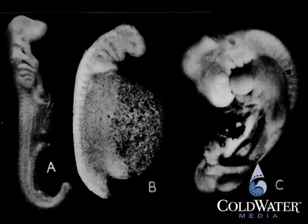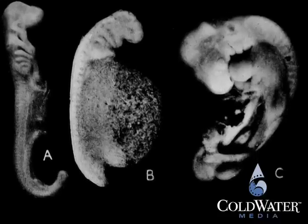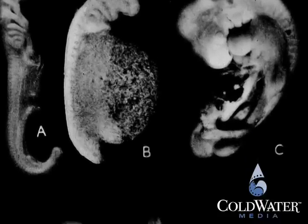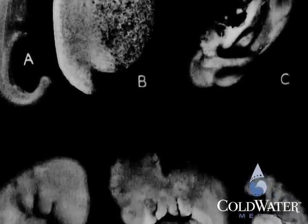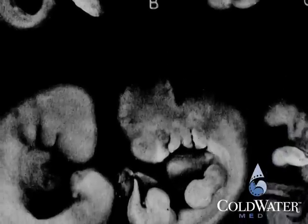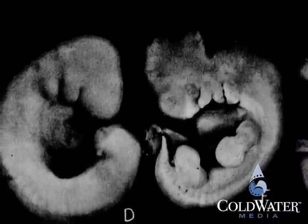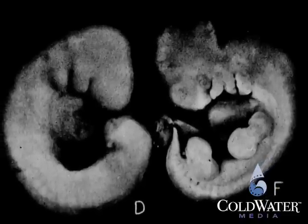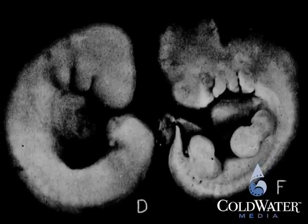Some textbooks actually use photographs of embryos, but they pick only that stage and those classes that happen to look most similar, and they omit the earlier stages and those classes that don't look similar. So, to me, that is picking the evidence very carefully to support the theory, and that's not good science.